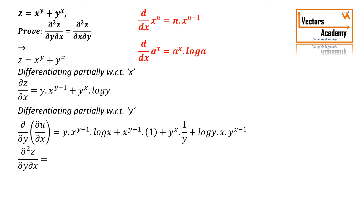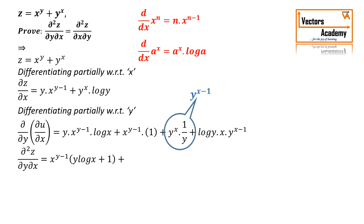Looking at the first two terms, both contain x raised to y minus 1, so we take x raised to y minus 1 as a common factor. Then the next two terms share y raised to x minus 1 as a common factor. Taking these out, we get the left-hand side expression. So this is how we find the left-hand side — differentiating first with respect to x, then with respect to y.